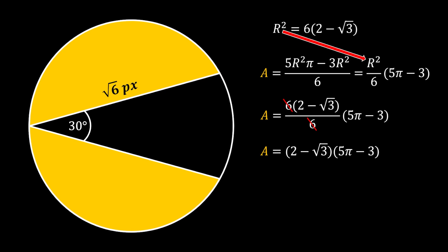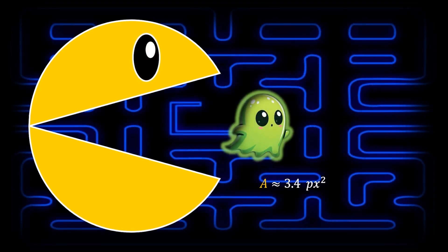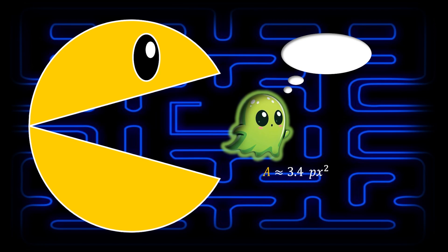Calculating this, the Pac-Man's area is approximately 3.4 square pixels — and that's our solution! Now here's a challenge: try to find the formula for the area of the Pac-Man that works for any angle and any length of the Pac-Man's jaws.